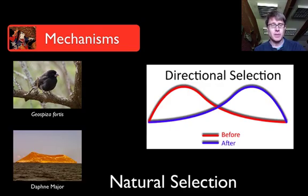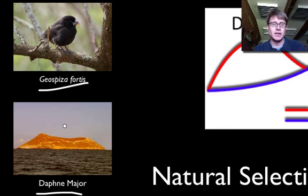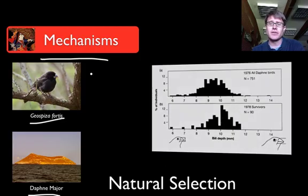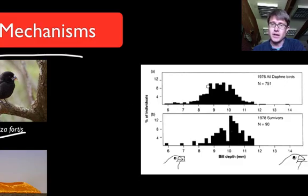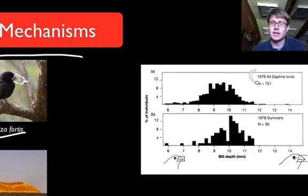The most famous studies on the Galapagos were done by Peter and Rosemary Grant. They studied Geospiza fortis on Daphne Major — just a rock in the Galapagos, but a great natural laboratory for studying bird populations. Natural selection selects species to either survive or die, and then traits are passed on to the next generation. In 1976 they sampled all the birds on Daphne Major, measuring beak depth — the distance from top to bottom — capturing them in nets and measuring with a caliper.